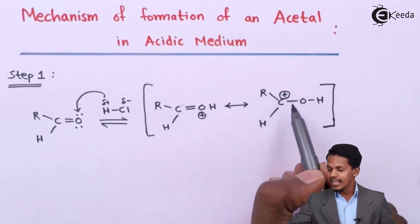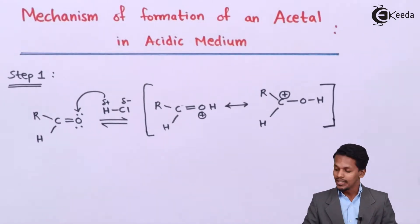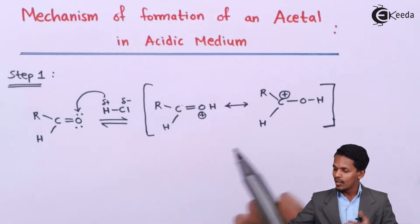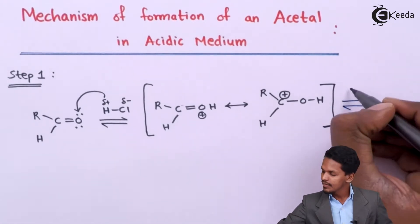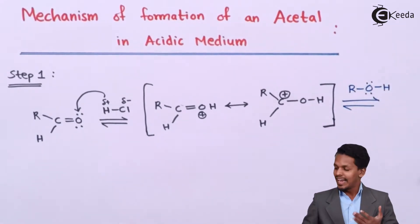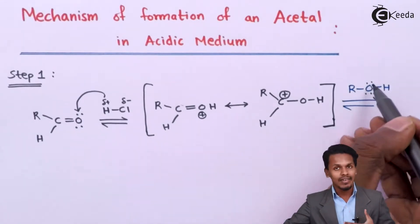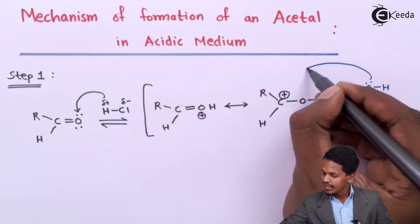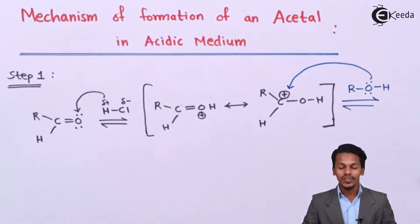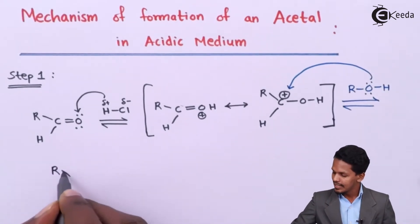This carbocation that has been formed will react with the first alcohol to form the hemiacetal. We are introducing the alcohol, represented as ROH. Since the carbon acquires a positive charge, the oxygen of the alcohol will attach to this carbon atom, and I am writing the product here as RCH.